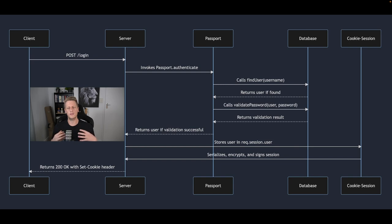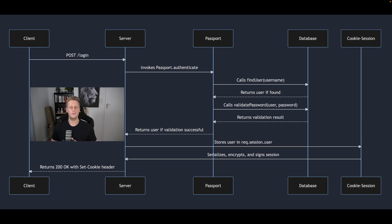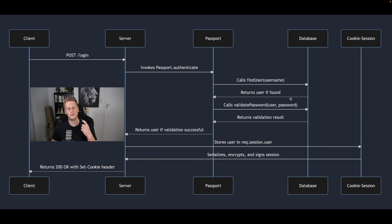We're going to use cookie-session to serialize and store some information — in this case just a user ID — and then sign that session. Once cookie-session does its thing, it sends that flow back to the server, which then responds with a 200 OK, setting the cookies containing the information we need as well as the mechanisms to validate that every request with that cookie is a valid one. That's a high level overview of how the authentication process works for the login endpoint.